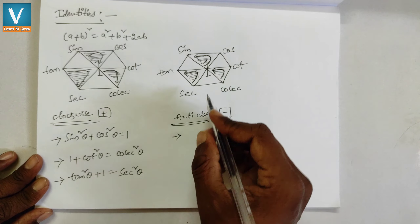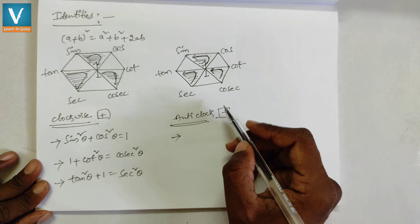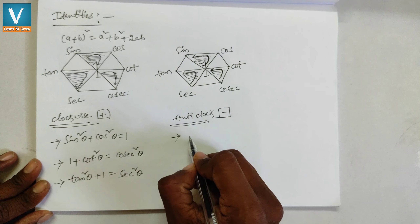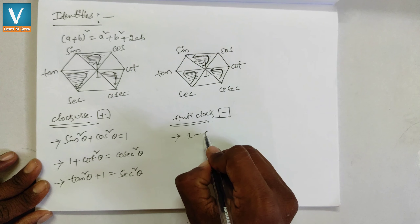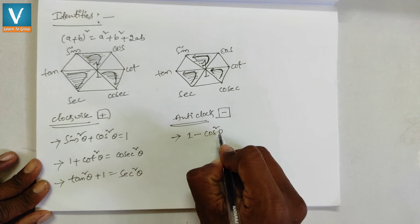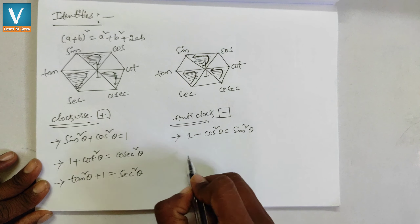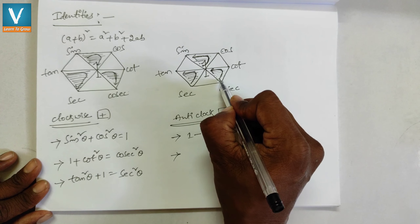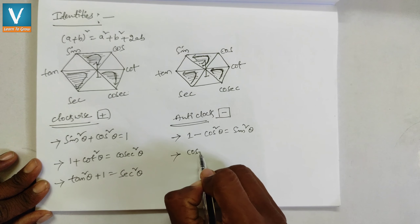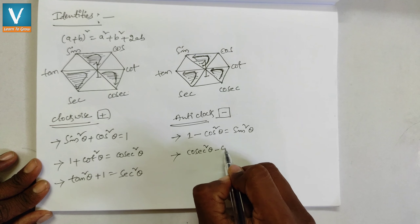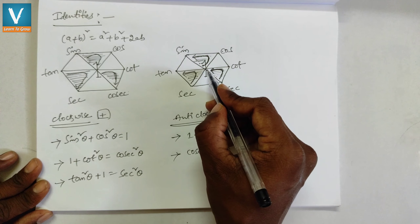Using the anti-clockwise direction with a minus symbol: starting from 1 going anti-clockwise, the first formula is 1 − cos²θ = sin²θ. The second formula, starting from cosec anti-clockwise: cosec²θ − cot²θ = 1. The third formula, starting from sec: sec²θ − 1 = tan²θ.